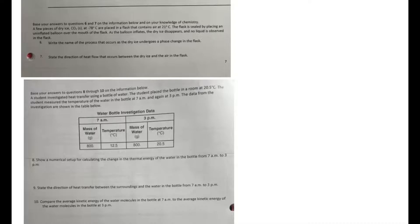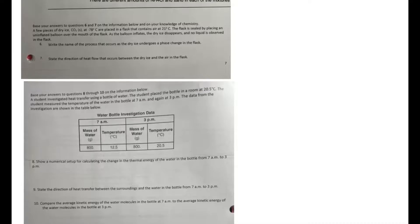Let's move on. Base your answers to this paragraph right here. A few pieces of dry ice, CO2 solid, that's kind of important to know it's solid because it's dry ice, at negative 78 degrees Celsius are placed in a flask that contains air at 21 degrees Celsius. The flask is sealed by placing an uninflated balloon over the mouth of the flask. As the balloon inflates, the dry ice disappears and there is no liquid observed in the flask. Write the name of the process that occurs as dry ice undergoes a phase change. So we know it starts as a solid. It says no liquid is observed and the balloon inflates, so can you guess? It goes from a solid to a gas because the balloon is inflated by gas. So you're just going to have to know this: solid to gas directly is called sublimation.